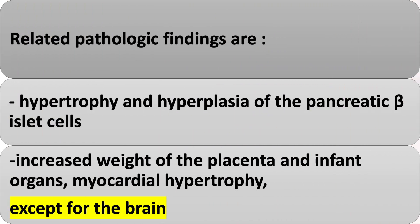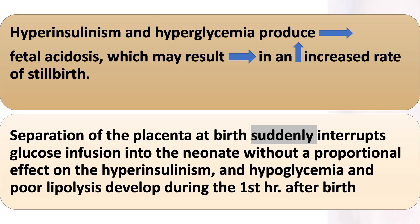Related pathologic findings are hypertrophy and hyperplasia of the pancreatic islet cells, increased weight of the placenta and infant organs, and myocardial hypertrophy — except for the brain. Hyperinsulinism and hyperglycemia produce fetal acidosis, which may result in an increased rate of stillbirth.